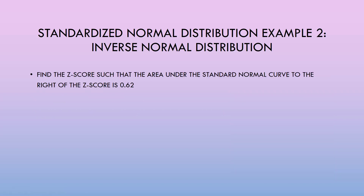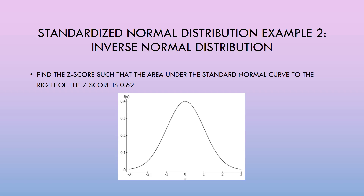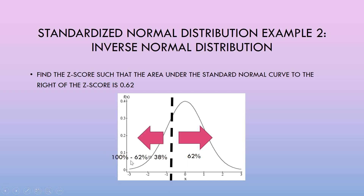Example 2: Find the z-score such that the area under the standard normal curve to the right of the z-score is 0.62. This time we are cutting the normal distribution so that the area to the right of this cut is about 62%, and the remaining area is 100 minus 62, or 38%. Since I eyeballed the line, I don't know precisely where it lands, which is why we use StatCrunch to find the z-score precisely.